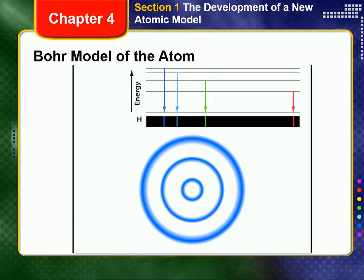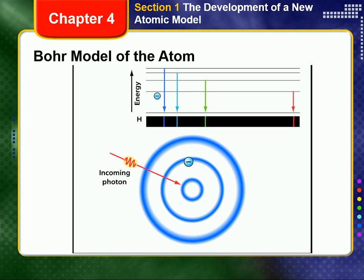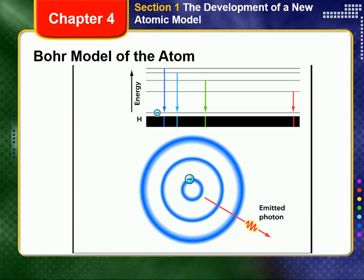The Bohr model introduced the idea of quantized energy states for electrons in atoms. In the Bohr model, the electron moves in circular orbits about the nucleus and can circle the nucleus only in allowed paths. The atom has a definite fixed energy when the electron is in one of these orbits. While in an orbit, the electron can move to a higher energy orbit by gaining energy equal to the difference between the orbits. When a hydrogen atom is in an excited state, its electron is in a higher energy orbit. When the atom falls back from the excited state, the electron drops to a lower energy orbit and a photon is emitted, with energy equal to the energy difference between the higher and lower energy orbits.